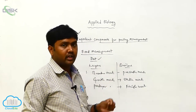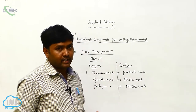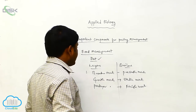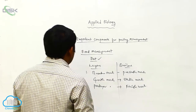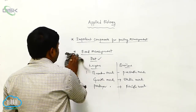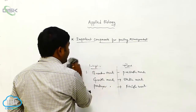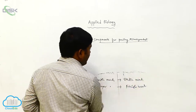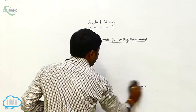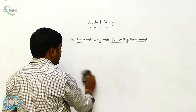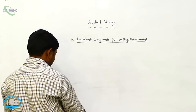For broilers, the diets provided are brooder mash, pre-starter mash, and finisher mash. These mashes completely contain more nutrients in the food particles.